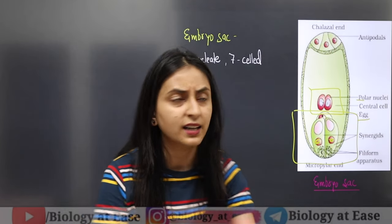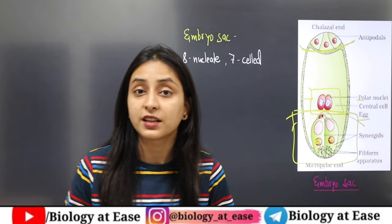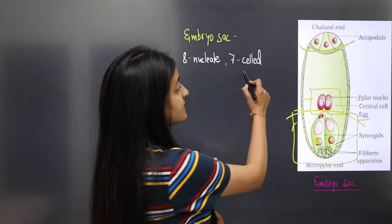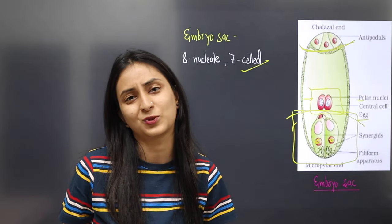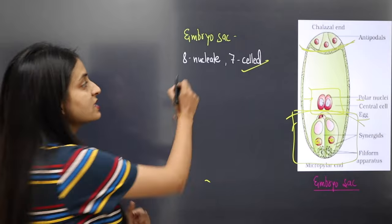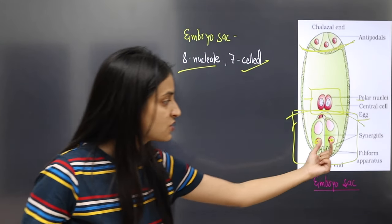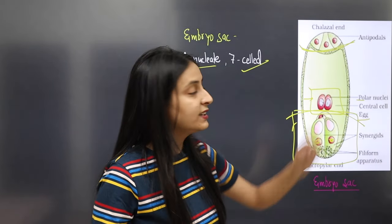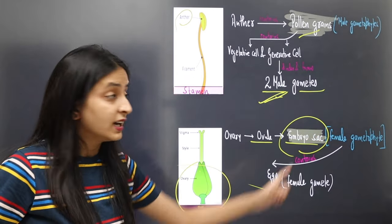So how many cells and nuclei are in the embryo sac? Three cells at the micropylar end, three cells at the chalazal end - that is six cells, each with one nucleus. The seventh cell is the central cell, which has two nuclei - the polar nuclei. So the embryo sac has a total of seven cells but eight nuclei. It is described as a seven-celled, eight-nucleate structure. The three micropylar cells - two synergids and one egg cell - together are called the egg apparatus.